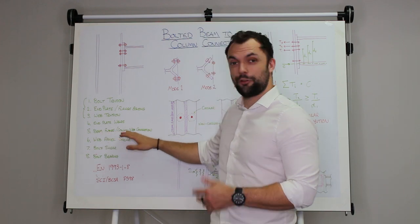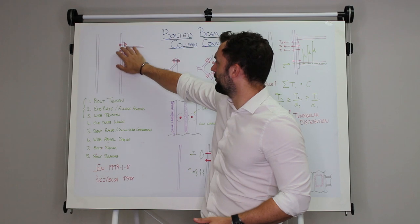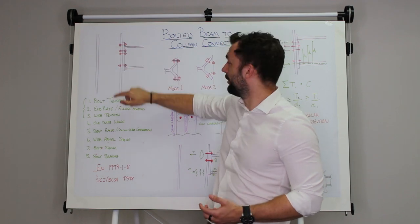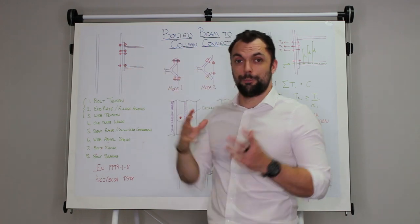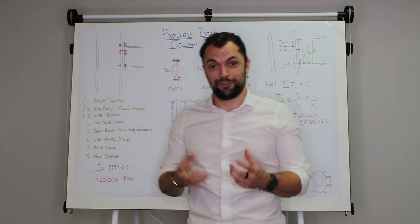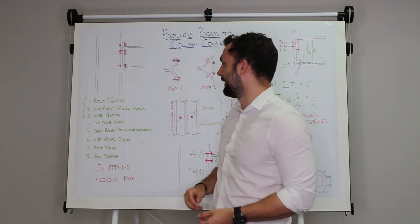Then you have either the beam flange or the column web in compression. So at the bottom here you've got tension at the top and in the bottom here we have compression. We have to check that the column web here and that the beam flange here are both capable of taking that compression, because you'll have just as much compression at the bottom of the joint as you have tension at the top of the joint here.